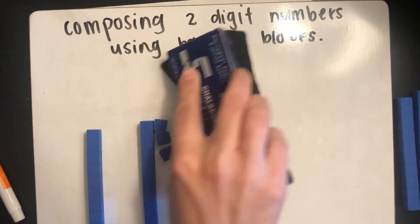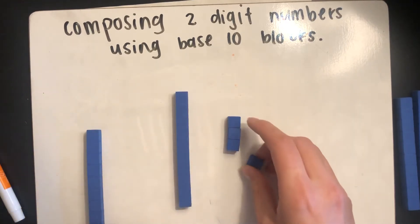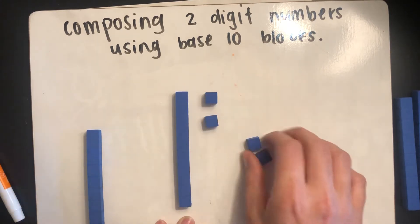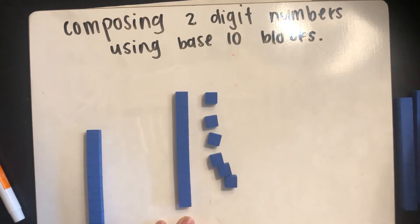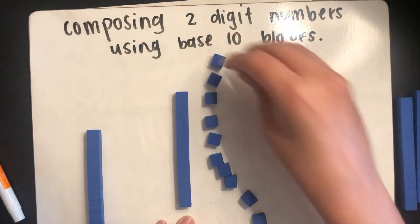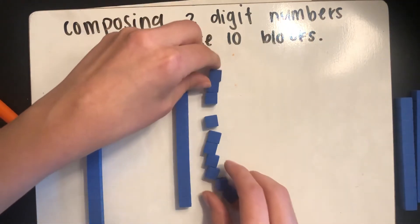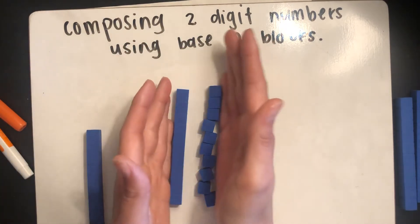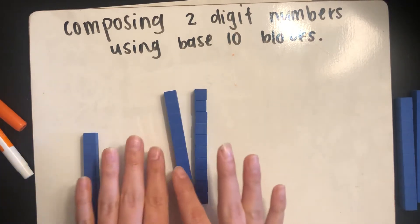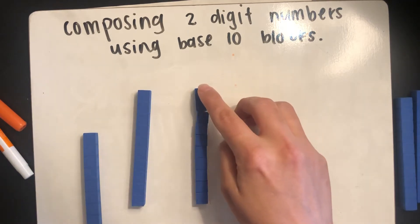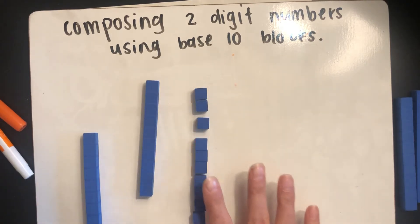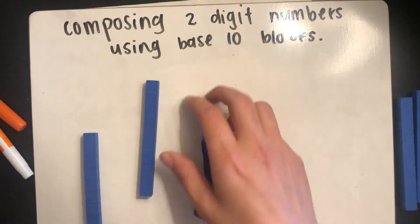Watch as I build a 10 stick using only ones cubes. If I counted out 10 ones cubes — one, two, three, four, five, six, seven, eight, nine, ten — and then squished them all together in a line, it would make a 10 stick. That's because we know that one 10 stick is the same as 10 ones. So that is why we can use these ones cubes and 10 sticks to represent two-digit numbers.